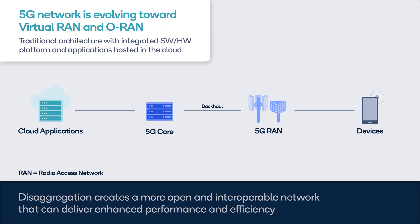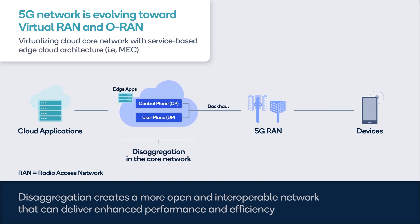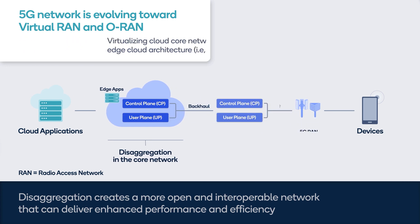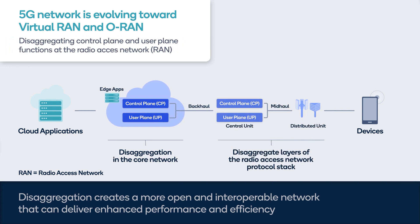Another longer-term research topic is the disaggregation of the 5G device stack, which will allow the 5G system to support new subscription models and richer user experience for services hosted on tethered devices. We are now seeing the trend of 5G network disaggregation, driven by the rise of virtualization and ecosystem initiatives like ORAN. Disaggregation creates a more open and interoperable network that can deliver enhanced performance and efficiency, supported at the 5G core through service-based edge cloud architecture and splitting of control and user plane functions. Similar splits exist in the RAN, in addition to disaggregation into central, distributed, and radio units.